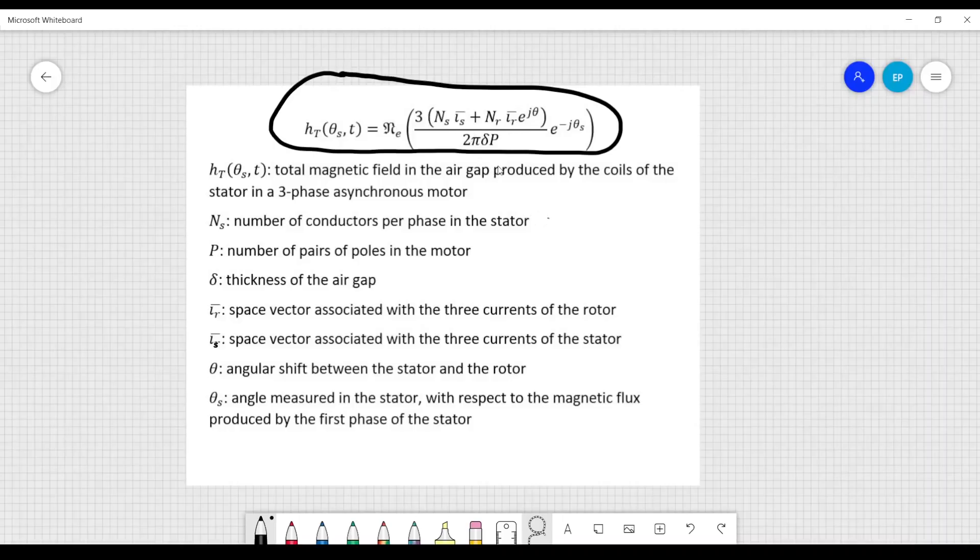These two here are not simply two currents, IS and IR, but each of these two symbols contains the information about the three phases of the stator and of the rotor. Therefore we have three currents in the stator and three currents in the rotor.